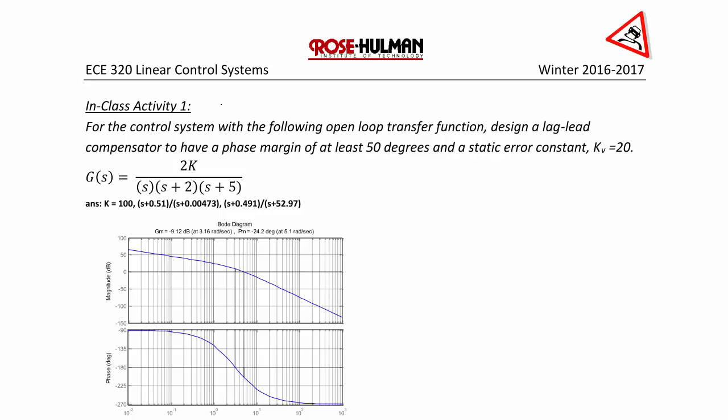Step one, kv is equal to the limit as s goes to 0 of s g of s, which is equal to 2k over 2 times 5, and that has to equal 20. So solving for k, k is equal to 100.